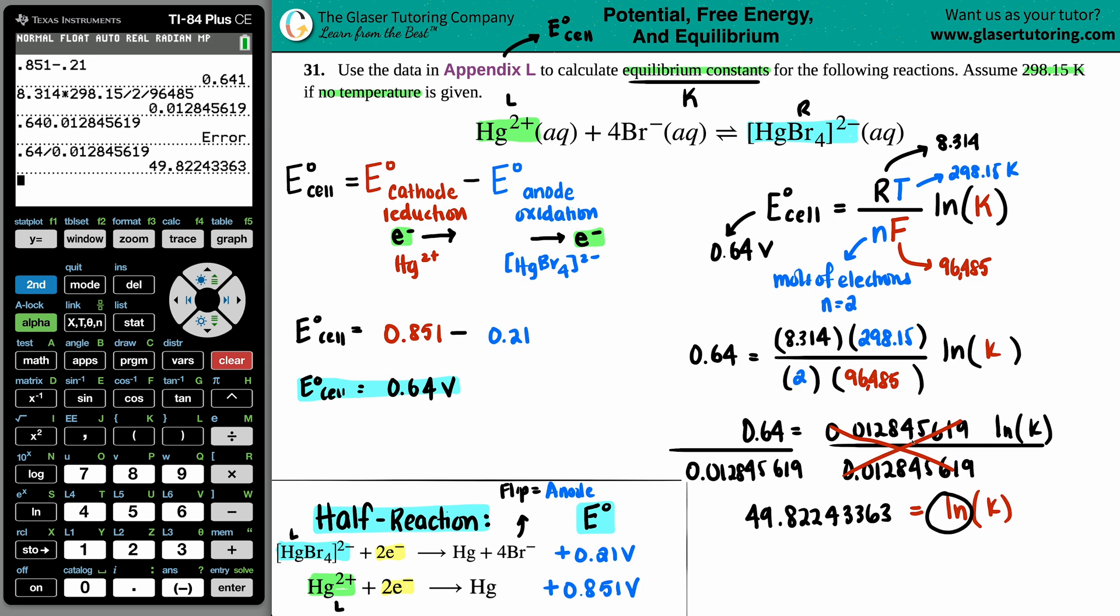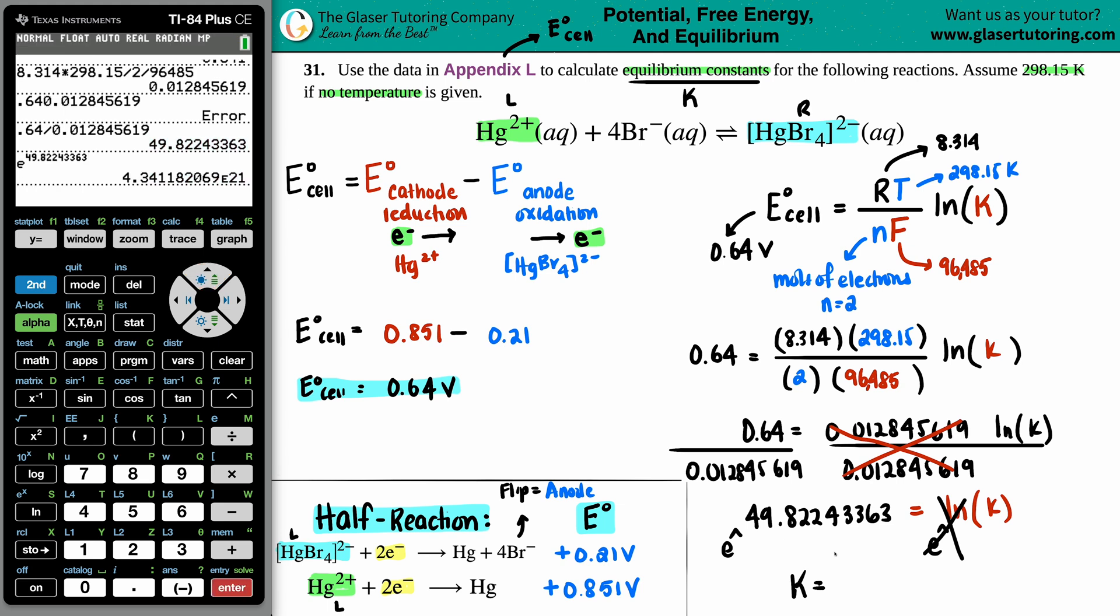And now if I want to undo the natural log, the inverse is E to the, so I have to do that on both sides to be fair, this will cancel out. And now I'm left with K equals second LN, that's the E button. Grab that whole number and just press enter. Don't you love the TI-84? Just makes life so easy. K equals 4.3 times 10 to the 21st. And that is your equilibrium constant.